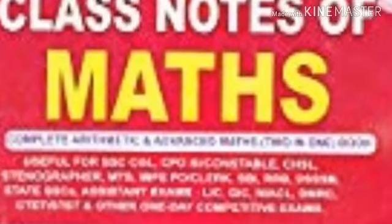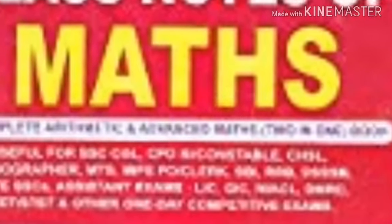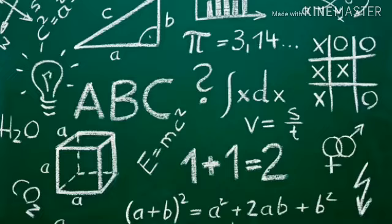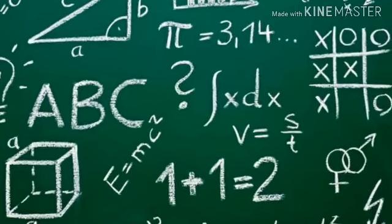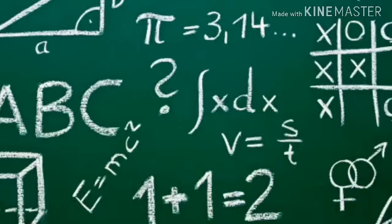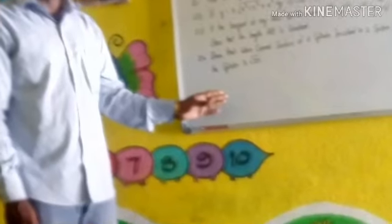18th Question: Find length of the triangle whose sides are x plus y plus 10 equal 0, x minus y minus 2 equal 0, 2x plus y minus 7 equal 0.